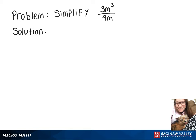We're going to simplify 3m cubed over 9m. So I want to rewrite that to make it easier for us to simplify. I know that 3 fits into 3, and 3 fits into 9.